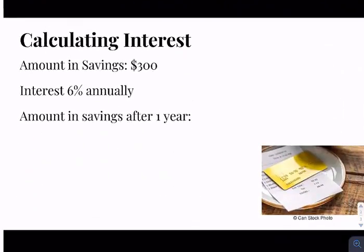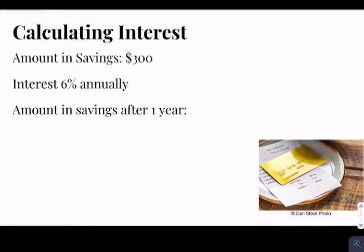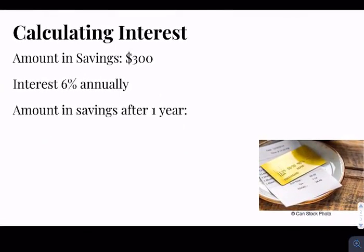All right. And now calculating interest. So interest comes in when you are working with banks or even taking out loans for college. But let's say we're talking about a savings account. So the amount that we put into our savings account on day one is $300. And our interest rate is 6% annually. That means every year we earn 6% of what we saved. So we need to figure out our amount in our savings after one year.